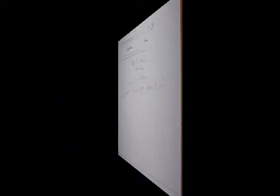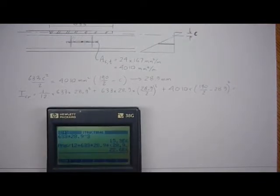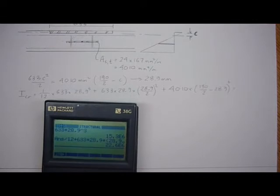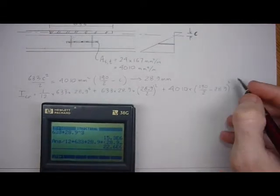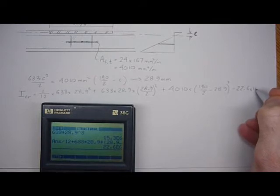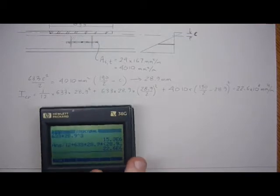It's going to be 633 times 20, so that comes out to be 22.6 times 10 to the 6 millimeters to the 4th per meter.